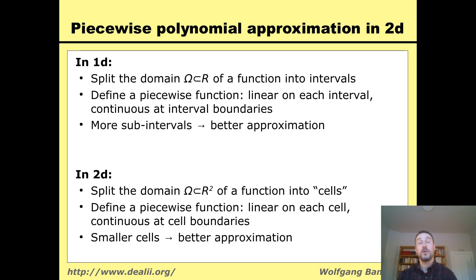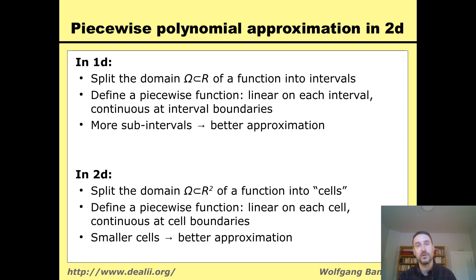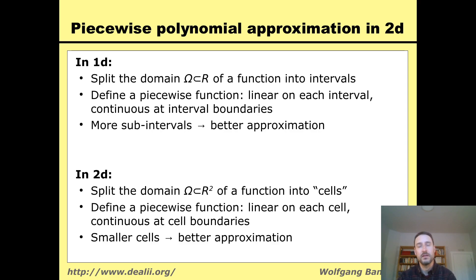So in 2D, I want to come up with a similar approach. I consider the domain of the function — all of the x1, x2 or xy values for which the function is defined — and split it into what we call cells. A cell is a simple geometric object, for example a triangle. On each triangle, I define the function I want to approximate the PDE solution with as, for example, linear.